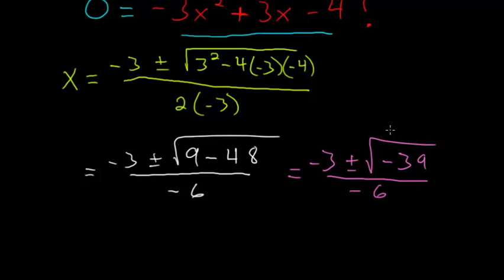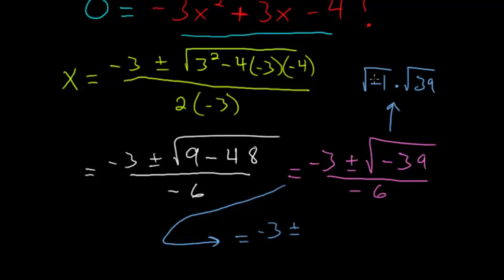And the square root of -39 can be rewritten as the square root of -1 times the square root of 39. So now rewriting our equation again, this is -3 plus or minus the square root of -1, which we know is just i, so it would be i times the square root of 39, all divided by -6.